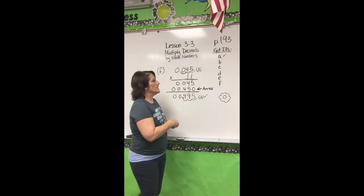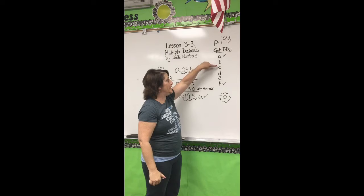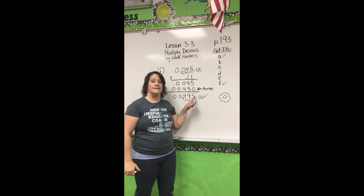There's your answer. We just finished Got It F. I want you to finish the rest of your Got Its: B, C, D, and E. Make sure that you show all your work, annex any zeros you need to, count over those decimals, and show that you did your estimation and check for reasonableness. I'll see you tomorrow.